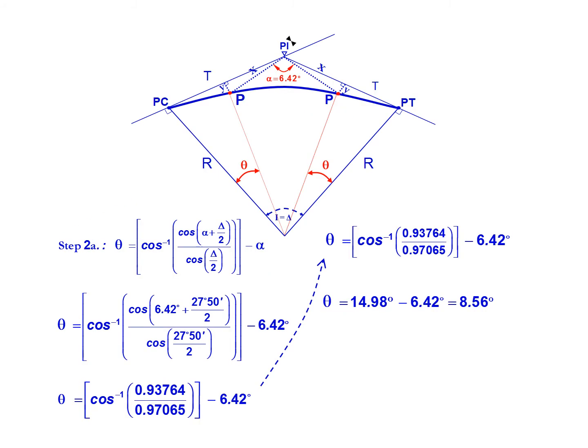The next step is to solve for theta. This is a fairly complex expression, so it's important to work through it in increments to ensure we solve for all the correct parameters. We'll input our value for alpha, 6.42 degrees.